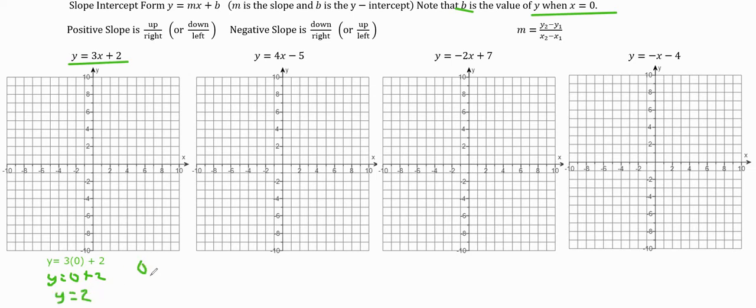This is the point 0, 2. We don't need to do this algebraically every time—I'm just showing this. So that point would go right here.